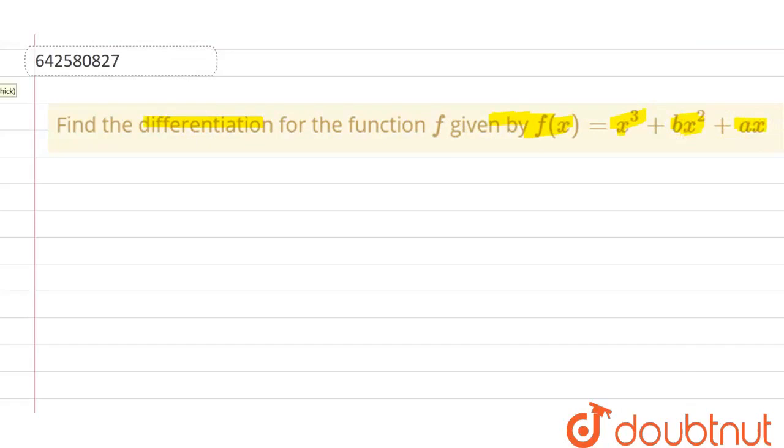So, we can start with the given function. The given function is f(x) equal to x cube plus bx square plus ax.